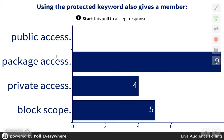It's definitely not public access — giving a member protected doesn't make them public. It's not private, because private means they only have access to the class itself. Block scope has nothing to do with it because the member is available to everything. So package access is the best answer. A package is a folder. If I create a package and something inside that package has the protected keyword, then a subclass of the superclass that has the protected keyword has access to that member.